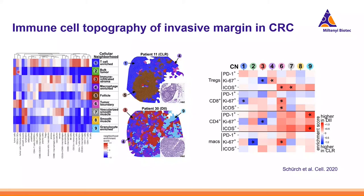After determining the phenotype of the different cells, they identified nine neighborhoods — essentially windows of a section showing which cell types are present in a particular area. The bulk tumor neighborhood mainly consists of tumor cells with little other cell types. T cell-enriched areas show a composition of many different cell types. They could identify a clear difference with the follicle neighborhood, which is a tertiary lymphoid structure — the main reason why prognosis for CLR colorectal cancer patients is much better, as there is immune cell interaction and activation not found in DII patients.